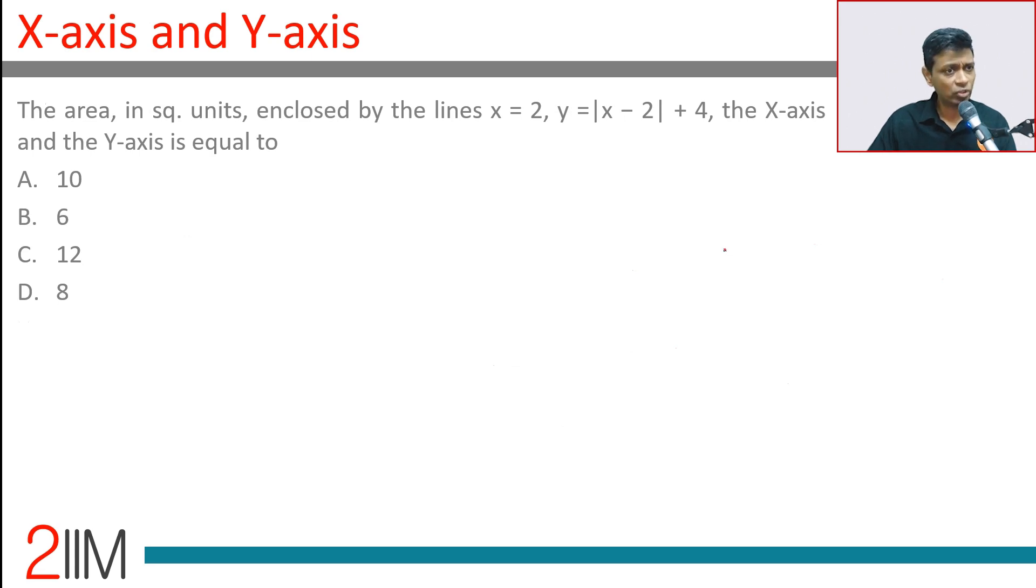Beautiful question, I really like this question. The area in square units enclosed by the lines x=2, y=|x-2|+4, and the x-axis and y-axis is equal to... wonderful.